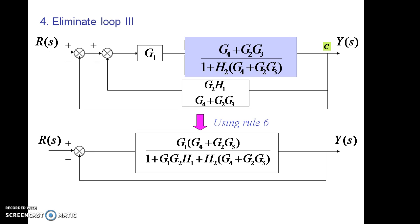Now this block G1 and the next block are in cascade connection, so those two can be multiplied. After that, a single block will be available in the feed-forward line and it becomes a simple feedback path. It can also be removed by using the transfer function formula. So the final feedback, feed-forward path gain will be G1 into G4 plus G2 G3 whole divided by 1 plus G1 G2 H1 plus H2 into G4 plus G2 G3 which is obtained after simplification.